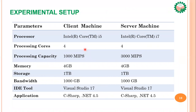The experimental setup: the client machine processor is Intel Core i5 and the server machine is Core i7. The processing cores of both client and server machines are 4. The processing capacity of the client machine is 1000 million instructions per second. The memory of both client and server machines is 4 gigabytes. The storage of both is 1 terabyte. The bandwidth of both client and server machines is 1000 megabits. The development tool for both is Visual Studio 2017 and the application language is C# 4.5.